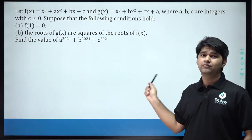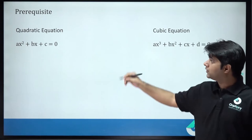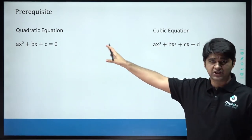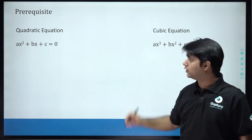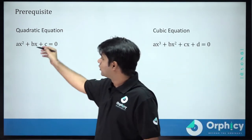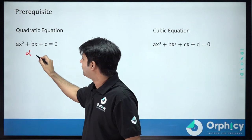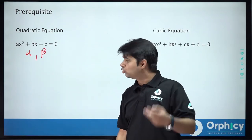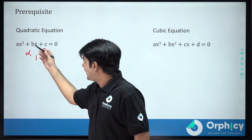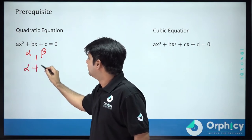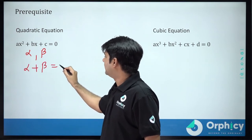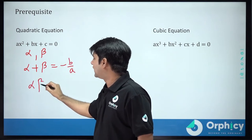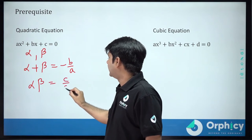To solve this question, we need to know a few things. For a quadratic equation, the standard form is ax² + bx + c = 0 where a should never equal 0. If the roots are alpha and beta, then alpha + beta = −b/a and the product of roots alpha·beta = c/a.